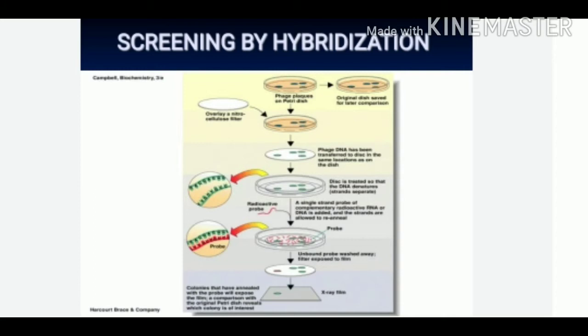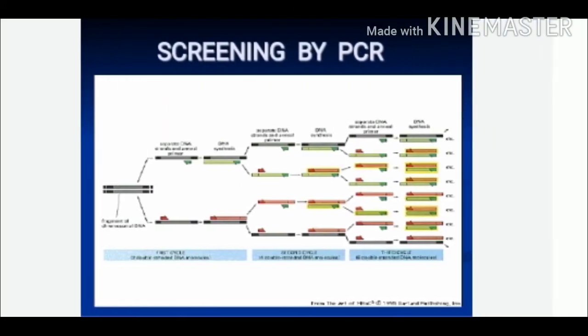After this step, the excess or unbound probe is washed off and the filter is exposed to film. On developing an X-ray film, colonies that have annealed with the probe will appear on the film. After this, a comparison with the original Petri dish reveals which colony is of interest.